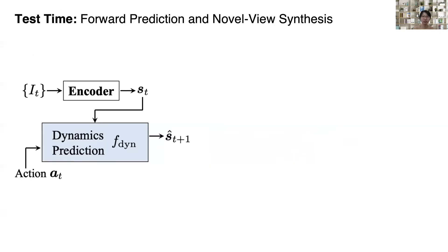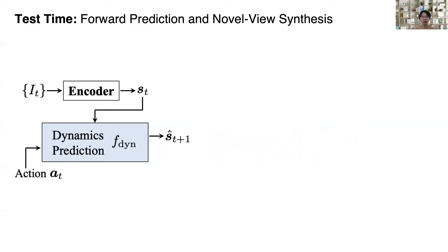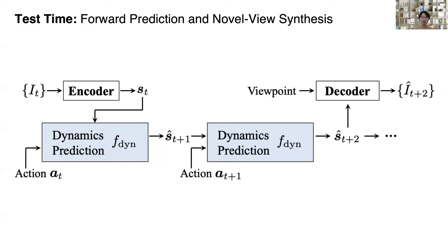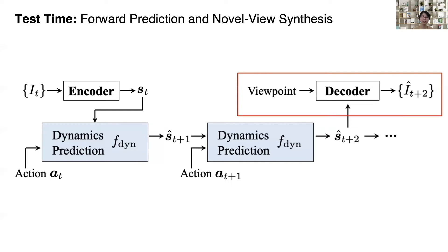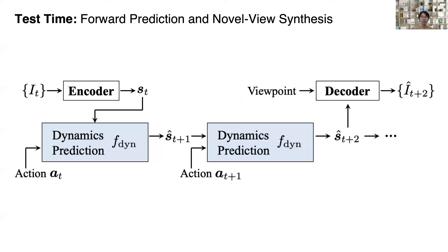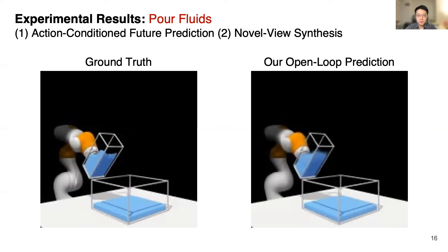During testing, we first feed the input image at time t to the encoder to generate the scene representation s_t. The dynamics model then takes s_t and the corresponding action sequences as inputs to iteratively predict the future. The decoder then synthesizes visual observations conditioned on the predicted state representation and an input viewpoint, allowing the system to synthesize images from novel viewpoints and predict future states. Yunzhu will now show experimental results and generalization to extrapolation viewpoints.